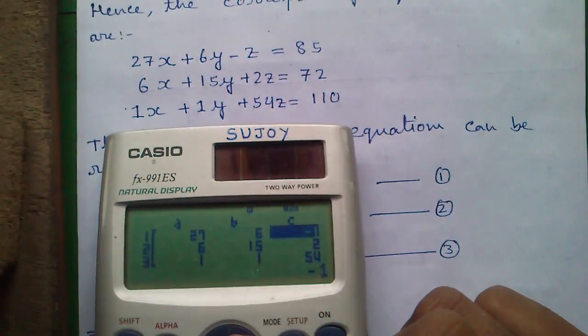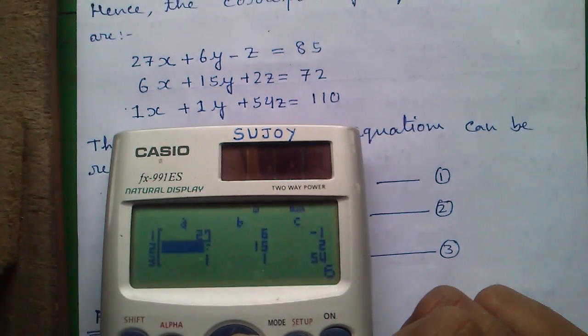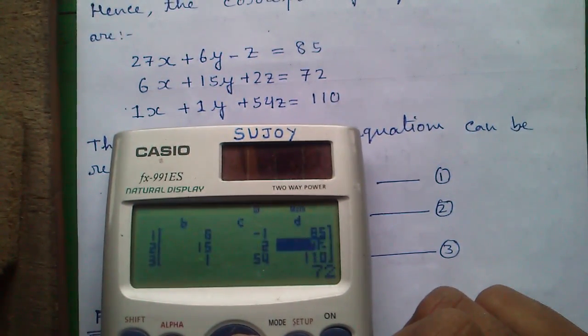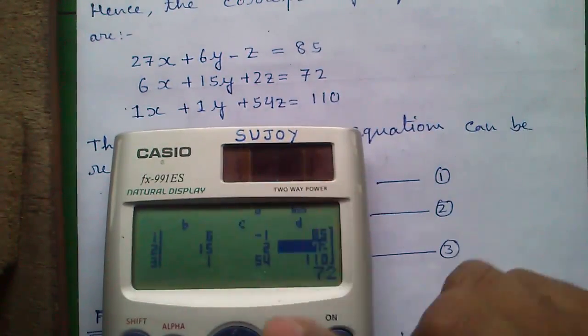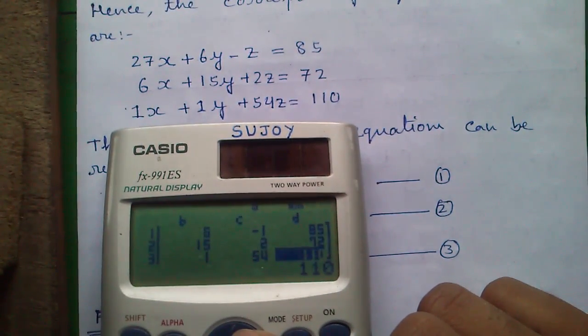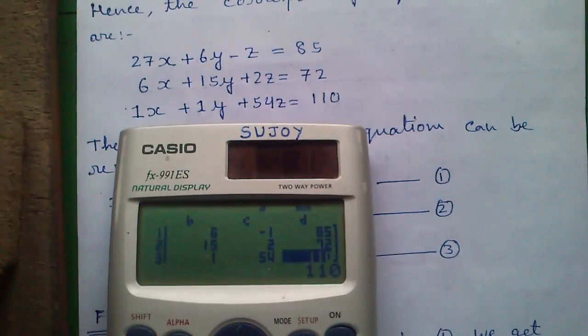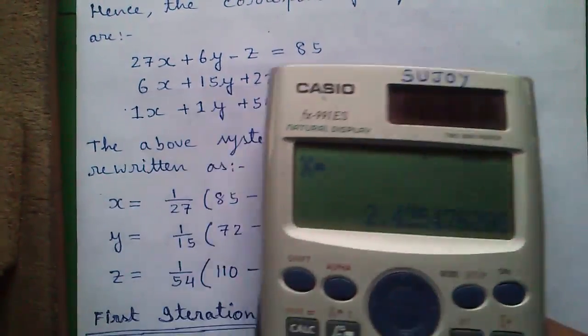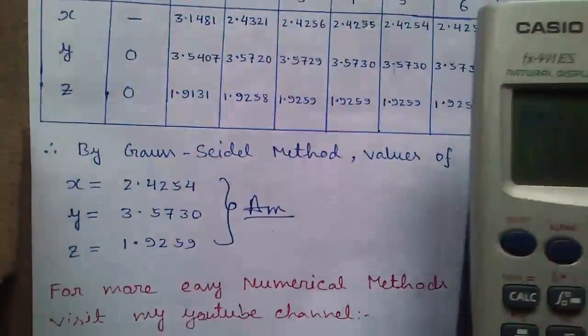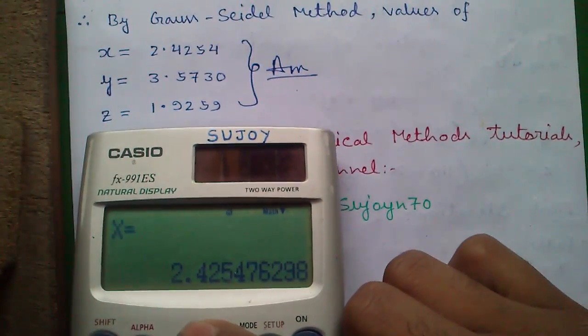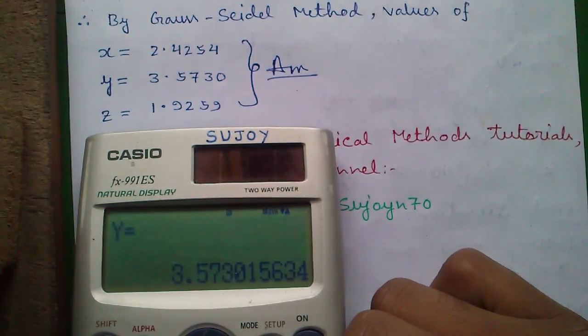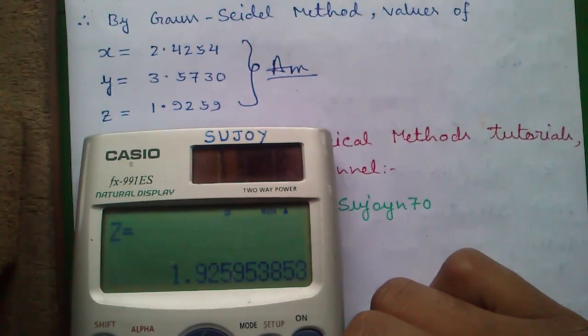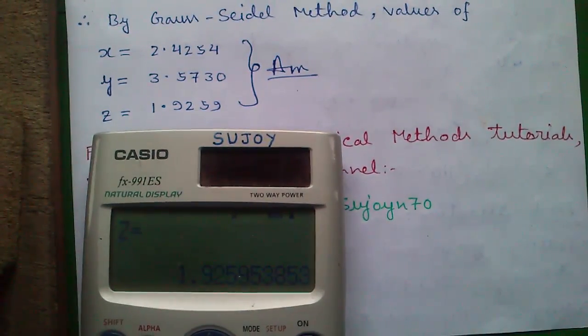27, 6, minus 1, 85, 6, 15, 2, 72, 1, 1, 54, and 110. And I will press equals to button. It will give you the value: x equals to 2.4254, y equals to 3.5730, and z equals to 1.9259. This was the preview.